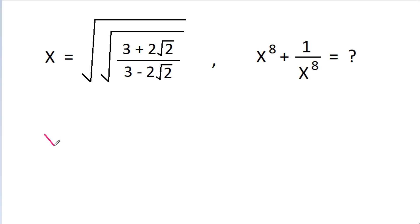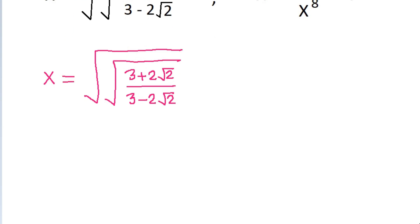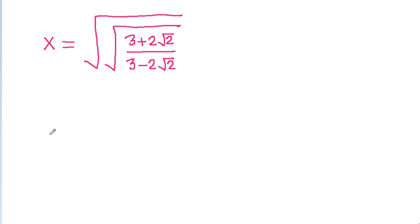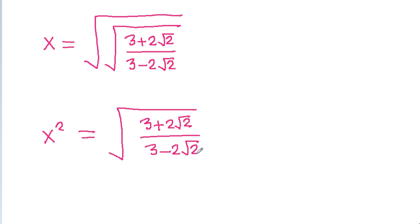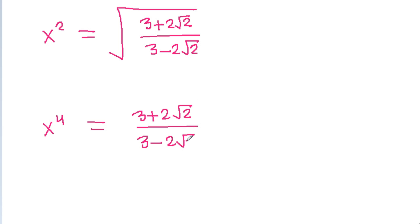We have given that x is equal to the square root of (3 plus 2 root 2) by (3 minus 2 root 2). If we square both sides, then one root gets cancelled and we get root of (3 plus 2 root 2) by (3 minus 2 root 2). If we again square both sides, then we get x power 4 is equal to (3 plus 2 root 2) by (3 minus 2 root 2).